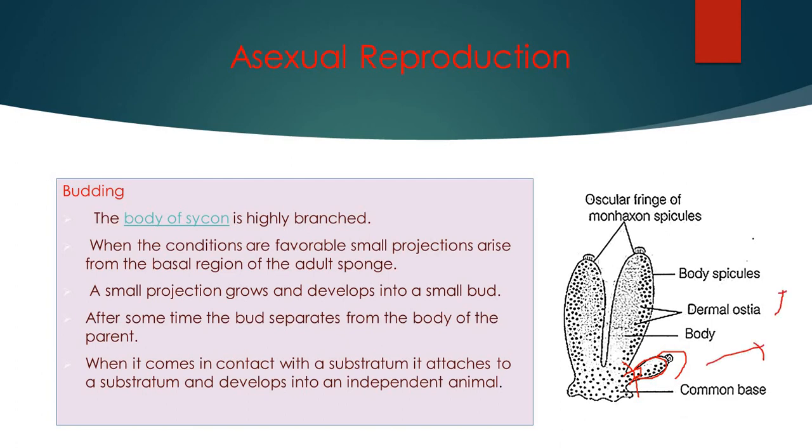And then when it starts moving in the water here and there, and when it comes in contact with some substratum, then they start forming their own bud. So gradually colony formation starts and independent life starts. Now after that, we can see next topic which is sexual reproduction.